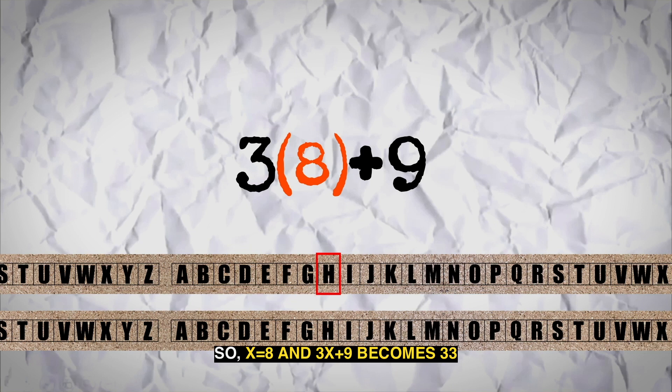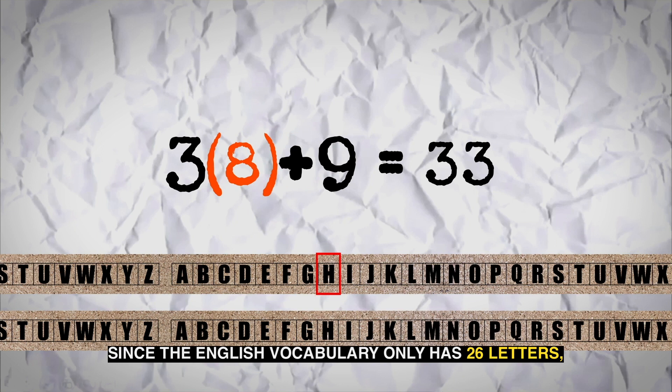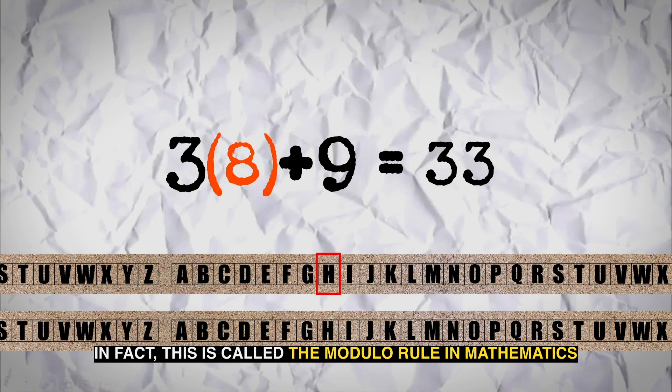So for x is equal to 8, 3x plus 9 becomes 33. Since the English vocabulary only has 26 letters, counting in circular fashion here makes sense. In fact, this is called the modulo rule in mathematics.